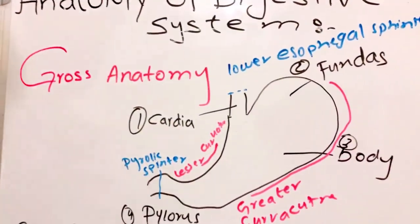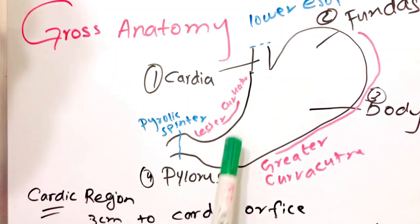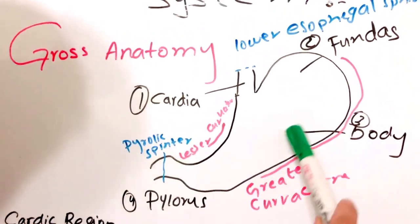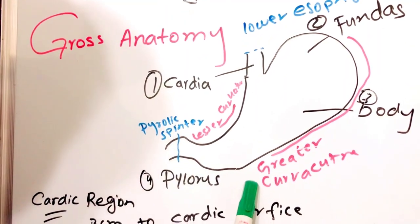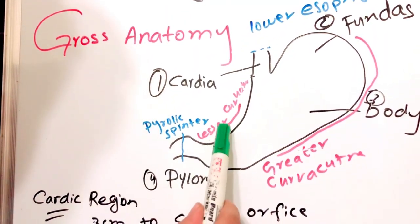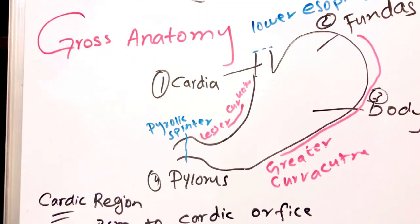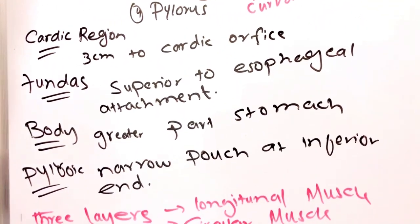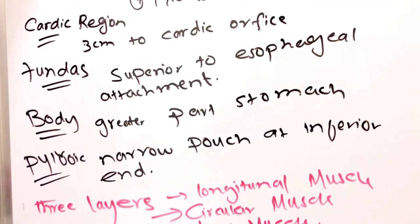Now we will discuss the gross anatomy of the stomach. First, we have the cardia, which lies just below the esophageal sphincter. The fundus is just superior to the attachment of the esophagus. The main area is the body of the stomach. The end part is the pylorus. The side with the greater curve is called the greater curvature, and the other side with the lesser curve is called the lesser curvature. At the end of the pylorus there is a pyloric sphincter. The body is the greater part of the stomach, and the pylorus is a narrow pouch at the inferior end.